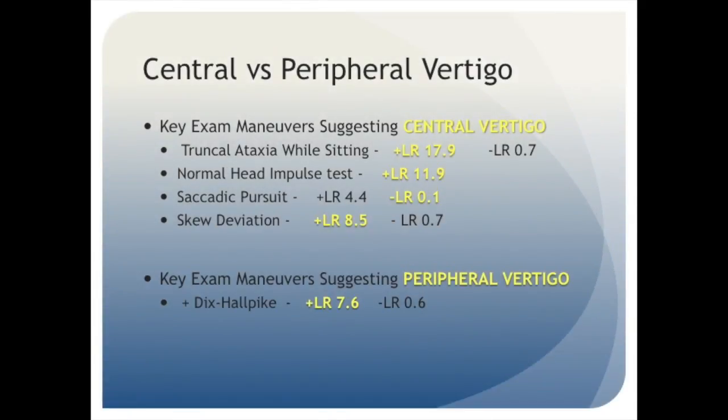Now, if your pretest probability suggests a peripheral rather than a central etiology to your patient's vertigo, the Dix-Hallpike maneuver is the most evidence-based test that you can do to support your hypothesis, with a positive likelihood ratio of 7.6. You should note, however, that the negative likelihood ratio is only 0.6, meaning that if you have a negative Dix-Hallpike maneuver, it does not necessarily rule out a peripheral cause for the patient's vertigo.